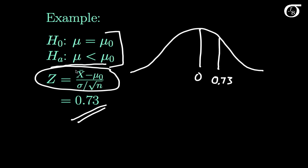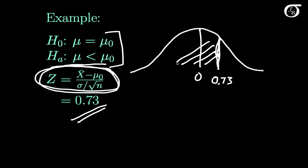If x-bar is much less than the hypothesized value of mu, that starts to give evidence against the null hypothesis. So if this z-statistic is small — in other words, far out in the left tail of the distribution — that gives evidence against the null. The p-value is the probability of getting the value we got, or something farther to the left, which is simply the area to the left under the standard normal curve. Using our table or a computer, we see that this is 0.7673.